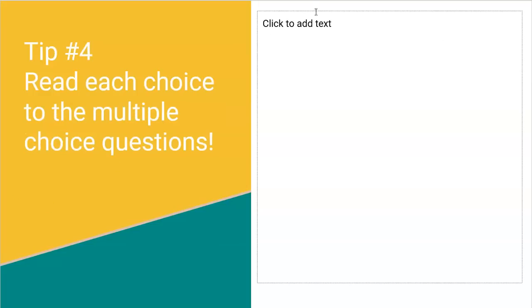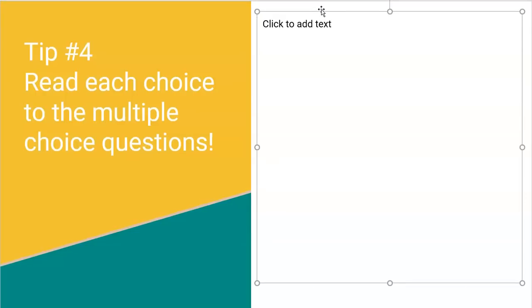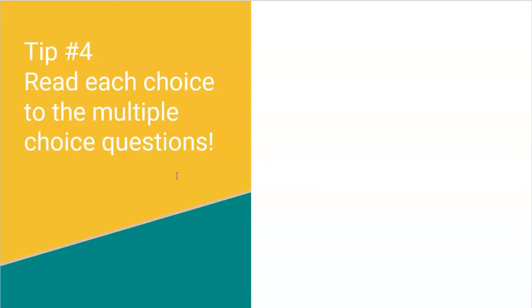Tip number four, read each choice to the multiple choice questions. A lot of times kids will read choice A and like, oh, that's it. That's exactly what I was thinking. And it's like, well, wait a minute. Maybe choice E is actually a little bit better. So many times when there's a lot of reading on the multiple choice, it could be the difference of one word. Maybe one word says sample mean and one word says population mean. Whoa, that's a big difference, whether it's a sample mean or population mean. That can completely change your choice. So take your time and read, circle, highlight, underline keywords that can help you make the right choice. But don't just stop at the first one you read just because you like how it sounds.